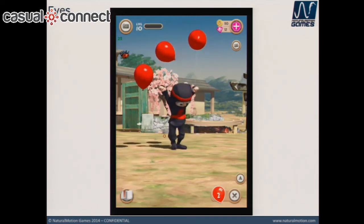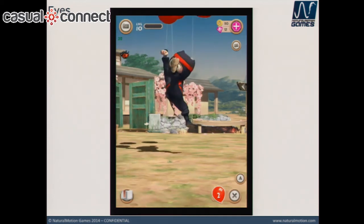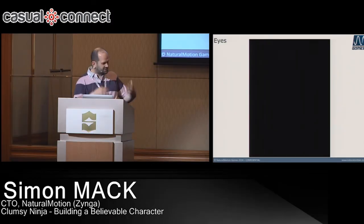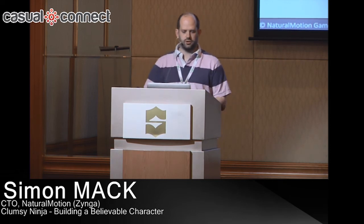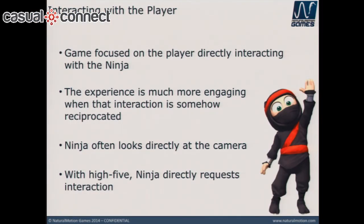By getting that right, you can start to get quite a lot of emotion out of the character. His body movement is pretty crude, but just from the way he stares at you at the end, you get a sense for what's going on. The game is very much about the player directly interacting with the ninja, having these very physical interactions. But that experience is much more engaging if somehow that interaction is reciprocated — the ninja looks at the camera, he looks at the player, he's kind of questioning you.